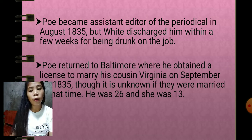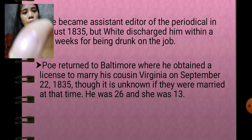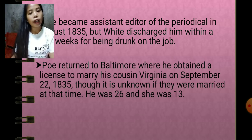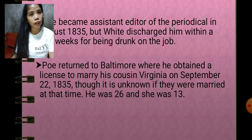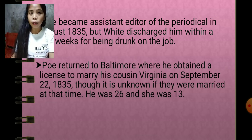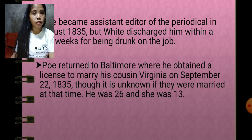Though it is unknown if they were actually married at that time, Poe was 26 years old and Virginia was only 13 years old.